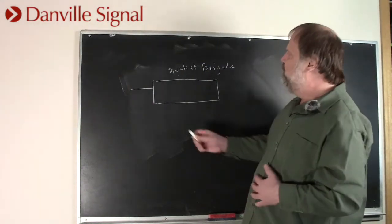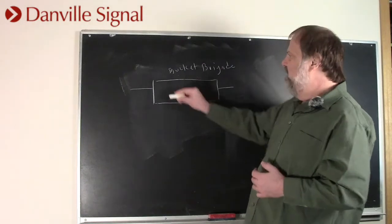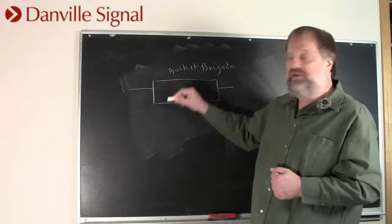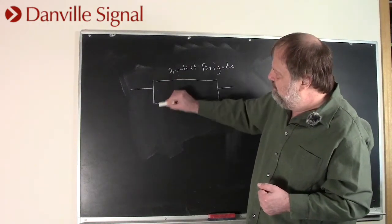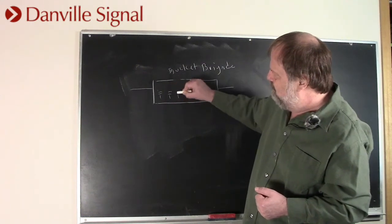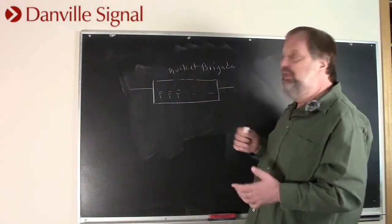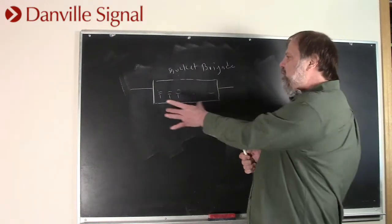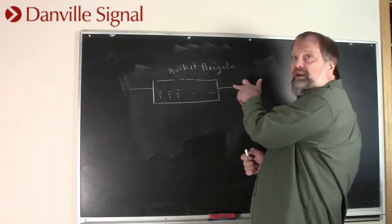And what this was, was a device that would have a bunch of capacitors inside. And you'd go through and you'd have a charge here and then charge toward here, charge toward here as it went down this little thing.